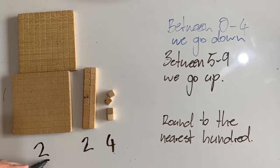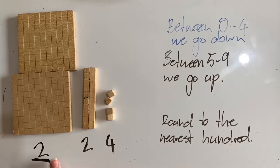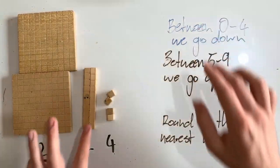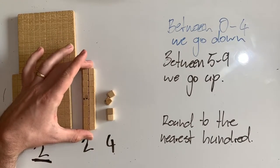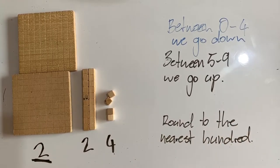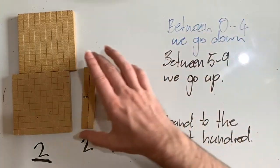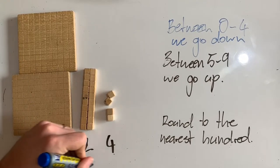I'm going to underline the hundreds column, because that's the digit I need to decide if it's changing or staying the same. To decide, I look at the digit directly to the right — so I'm now looking at the tens column. I need to decide if this is going to go up or down: if these tens are closer to no tens or to 10 tens, because that's 100. Two is between zero and four, so 20 is closer to zero than to 100. When I round it, this number is going to become 200.